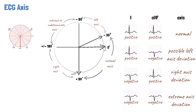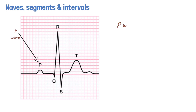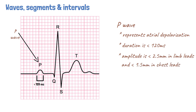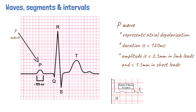After calculating the rate, rhythm and the axis, the next step in ECG interpretation should be the evaluation of the wave segments and intervals. The P wave is the first positive deflection on the ECG. It is a small smooth contoured wave and represents atrial depolarization. The normal P wave is generally less than 120 ms in duration, that is less than 3 small squares. The amplitude should be less than 2.5 mm in the limb leads and less than 1.5 mm in the chest leads. A normal P wave has a positive deflection in lead 2 and negative deflection in lead aVR.